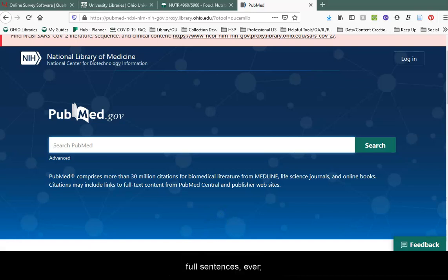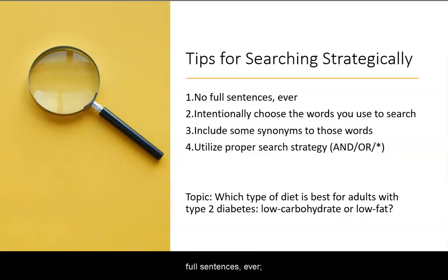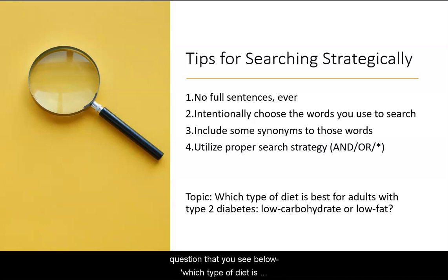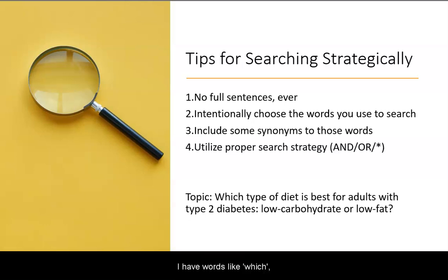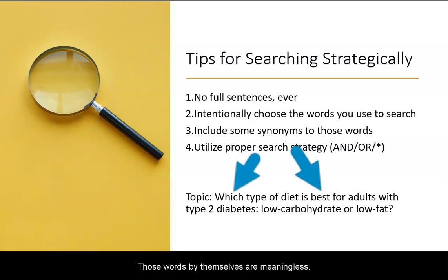Now, back to tip one. With tip one, we have no full sentences ever, which means I'm not going to copy and paste my research question that you see below — 'which type of diet is best,' etc. Why not? Because in that whole sentence, in that research question, I have words like 'which,' 'best,' 'with' — those words by themselves are meaningless.